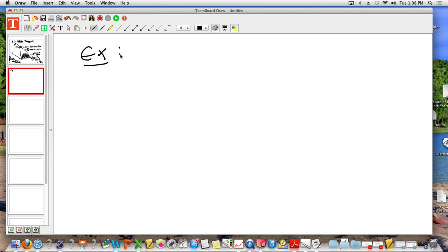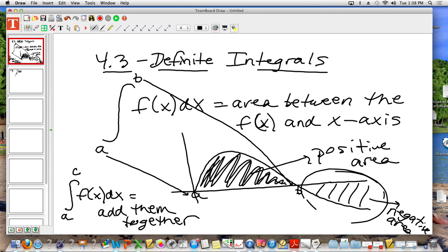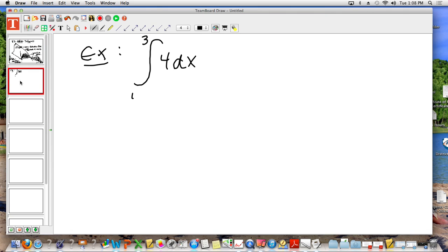All right, it's an example. What am I asking you to do, by the way? You have an integral symbol and you have an upper and a lower limit. What does that mean to you? You need to find the area. That's what that notation means. So, what we need to do is think about what does this graph look like. If you were to graph four, what does it look like? A horizontal line.